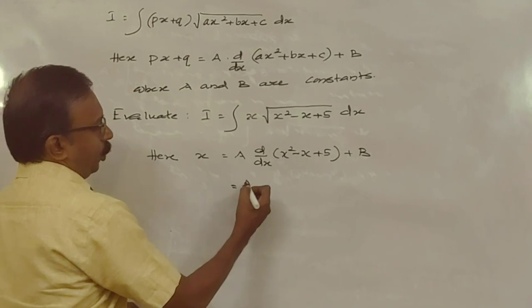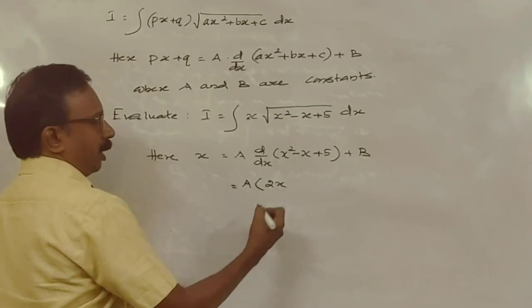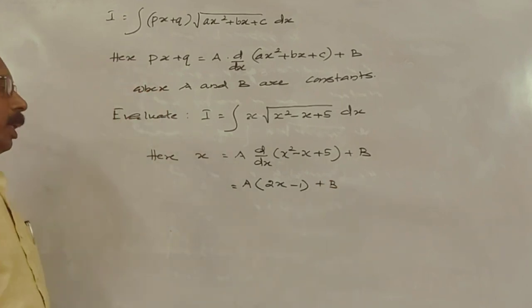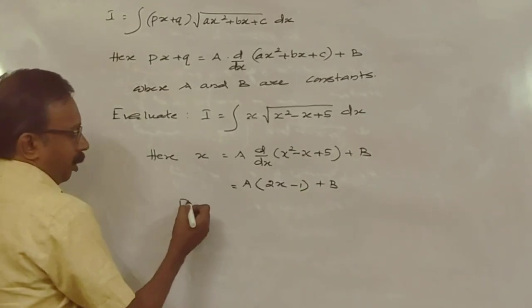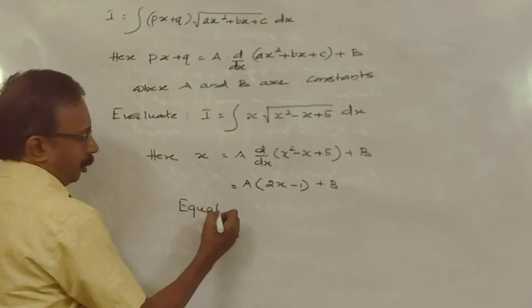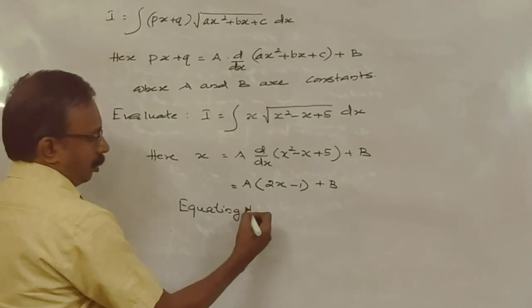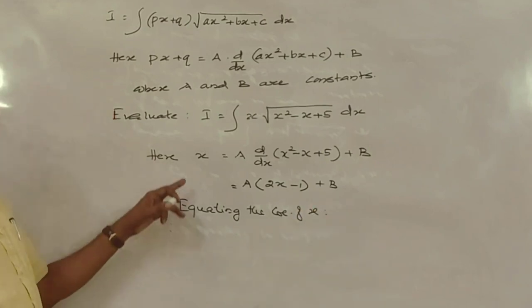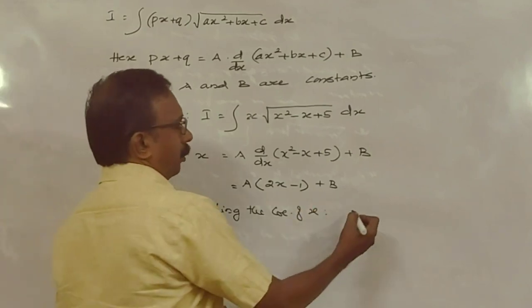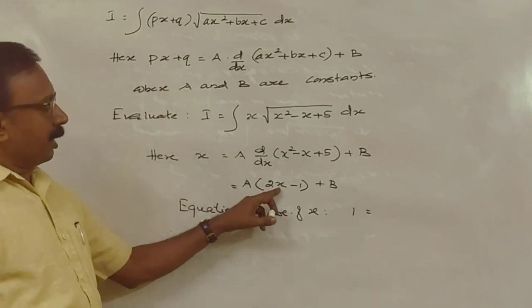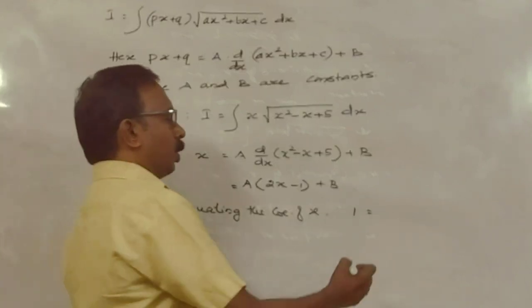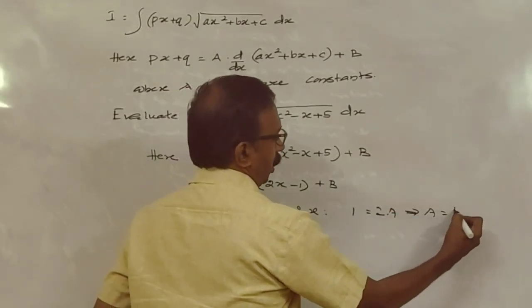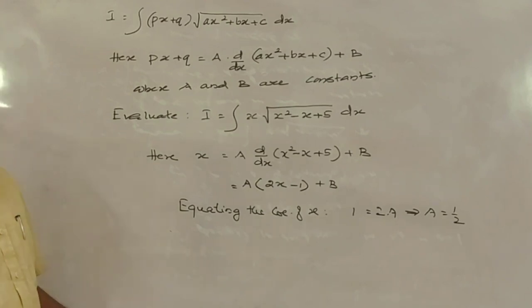That is A into derivative of (x² - x + 5) plus B, which gives A into (2x - 1) plus B. Now equating the coefficient of x: the coefficient of x on the left is 1, and on the right is 2A. So 2A = 1, giving A = 1/2.